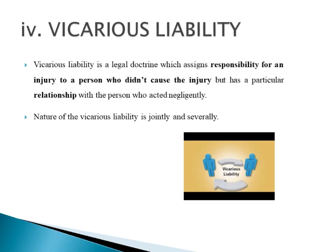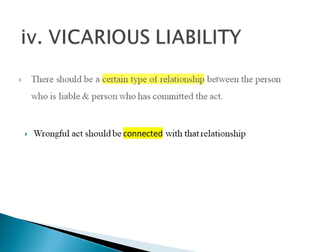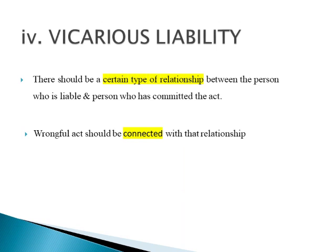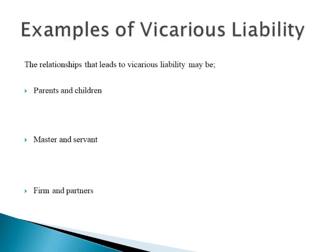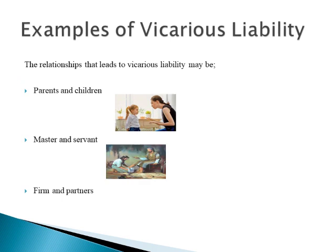For example, in a master-servant relationship, the servant along with the master will be liable. It must be remembered that for a person to be vicariously liable, there should be a certain type of relationship between the person who is liable and the person who has committed the act, and the wrongful act should be, in some way, connected with that relationship. The relationships that lead to vicarious liability may be parents and children, master and servant, and firms and partners. Thank you for watching this video.